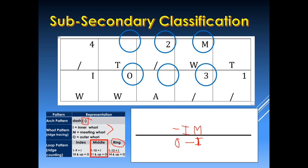Take note that the numerator should be aligned with one another. And in this particular division or classification, the dash here should not be removed — it should remain. Unlike in the secondary classification.